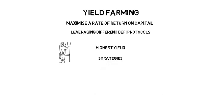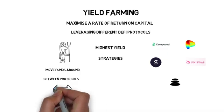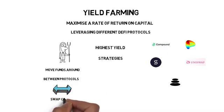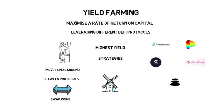The most profitable strategies usually involve at least a few DeFi protocols like Compound, Curve, Synthetix, Uniswap, or Balancer. If a strategy doesn't work anymore or if there is a better strategy available, the yield farmers move their funds around. They may move funds between different protocols or swap some of their coins to others that are currently generating more yield. In the yield farming world, this procedure is sometimes called crop rotation.